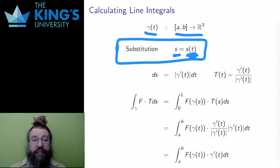Then I need the pieces of the substitution. The ds changes by the derivative of s(t). Here I need the length to make this a single variable substitution, so ds gets replaced by the length of the derivative of γ times dt. Then the unit tangent is T divided by its length.